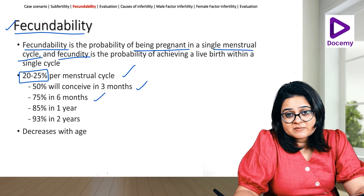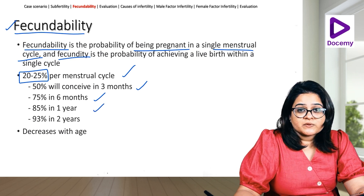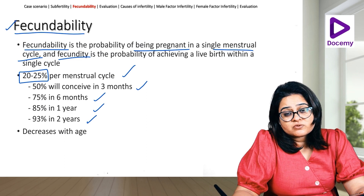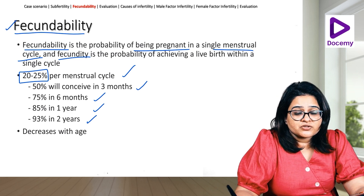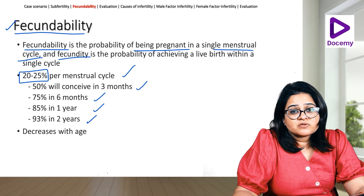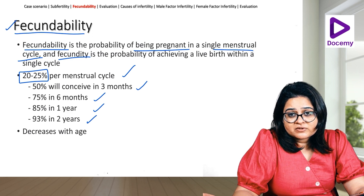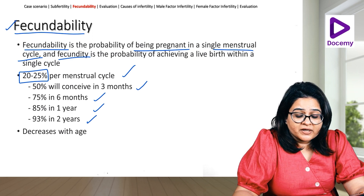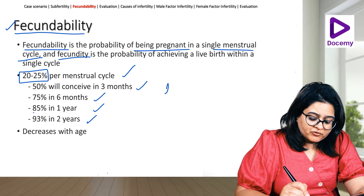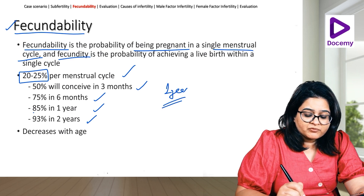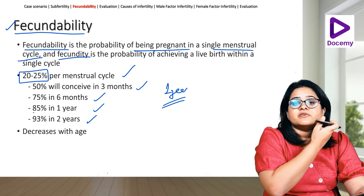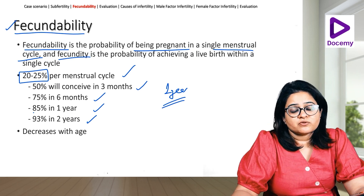Fifty percent of couples will conceive in three months, 75 percent will conceive in six months, 85 percent will conceive in one year, and 93 percent will conceive in two years without any intervention. So it's mostly a matter of time, and most couples will eventually conceive without any intervention. That's why we keep the cutoff of one year before evaluating or starting treatment.